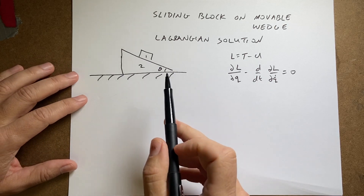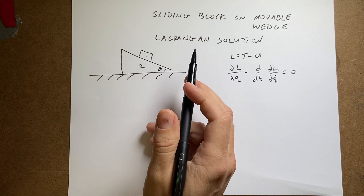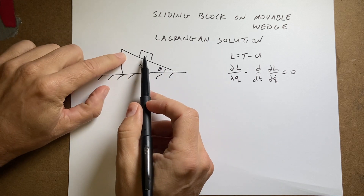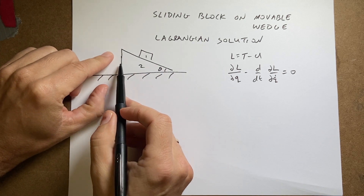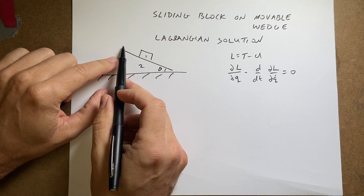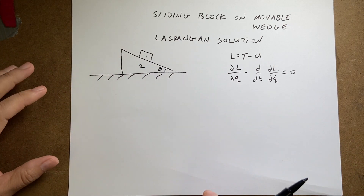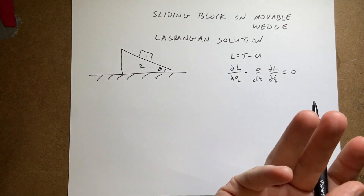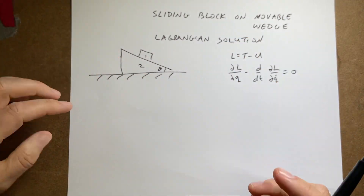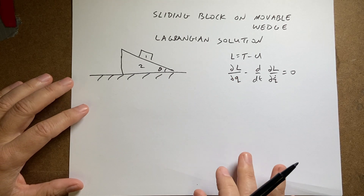We are back to the block on a movable wedge. I've already done this problem once using the momentum principle and work-energy to find the speed of a block. There's a wedge and a block, both with mass. The block starts at the top and slides down, while the wedge can also slide horizontally with no friction. I found the final speed using conservation of momentum and energy, and I'll link that video below. Now I want to redo the problem with Lagrangian mechanics.